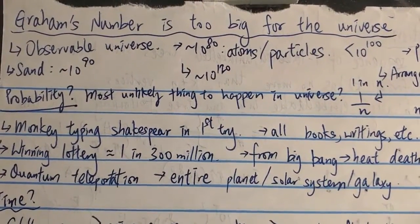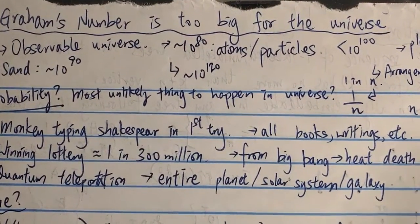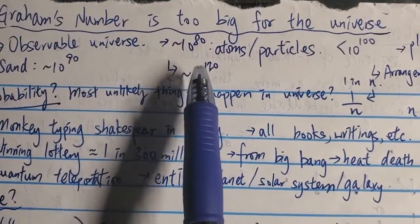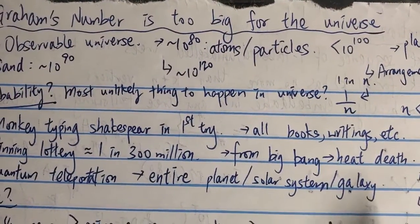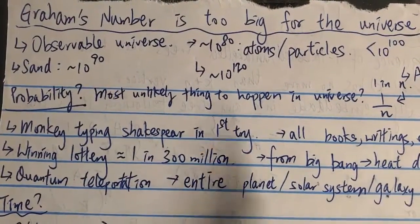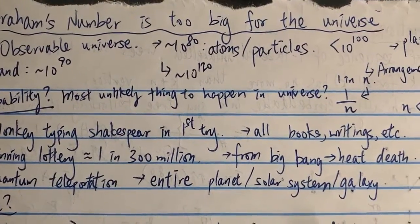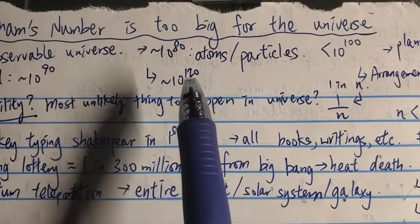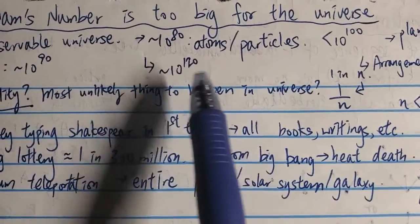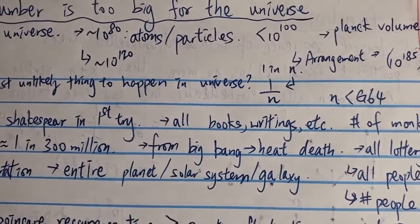In terms of physically how many atoms or fundamental particles are in the universe? It's around 10 to the power of 80, which is smaller than a googol. What if you fill the entire universe with grains of sand? That would be around 10 to the 90, which is still smaller than a googol. What if you fill the entire universe with fundamental particles? That would be around 10 to the 120 particles to fill the universe.